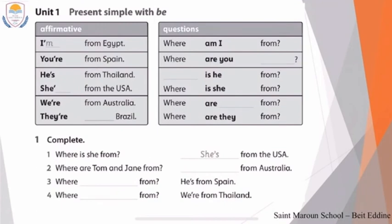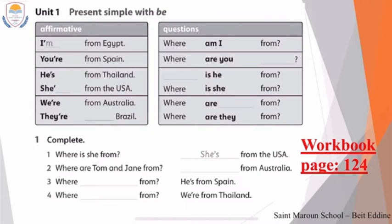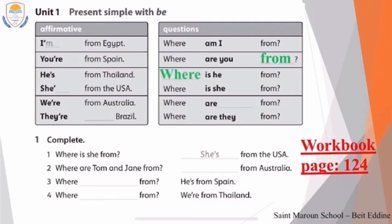Now I want you to open your workbook on page 124. Here we have present simple with 'be.' 'I'm from Egypt' is the affirmative. The question is: where am I from? 'You're from Spain' — where are you from? 'He's from Thailand' — where is he from? 'She's from the USA' — where is she from? 'We're from Australia' — where are we from? 'They're from Brazil' — where are they from?